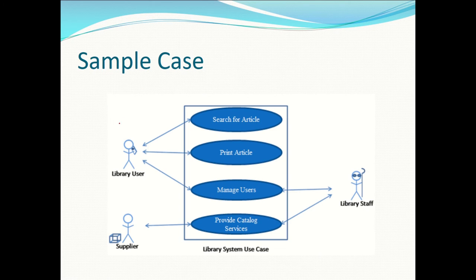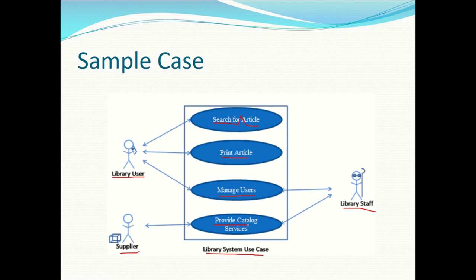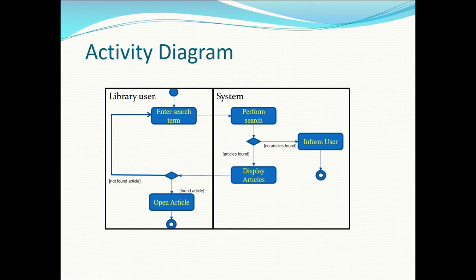Here is a normal use case diagram for a library system with three actors: library user, supplier, and library staff. The use cases are: search for article, print article, manage user, and provide catalog. Now we will write the use case description from this sample use case. The details of each operation will be included in the system description, and we draw the activity diagram to support this.